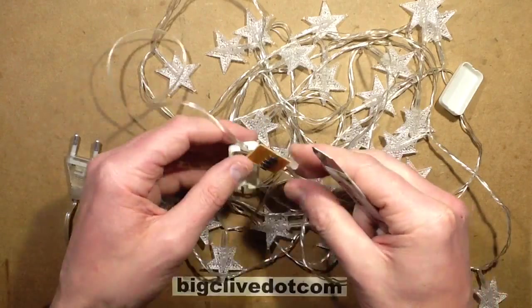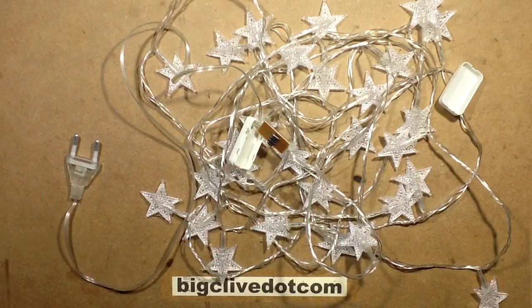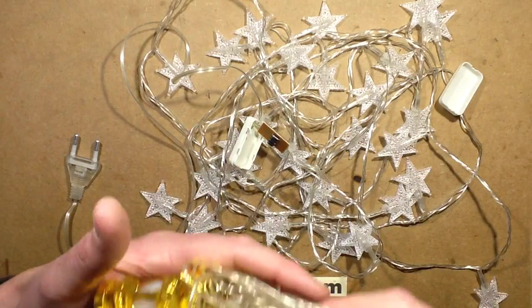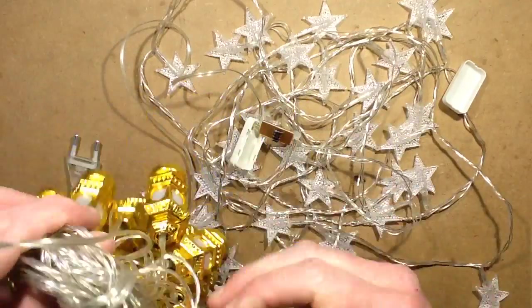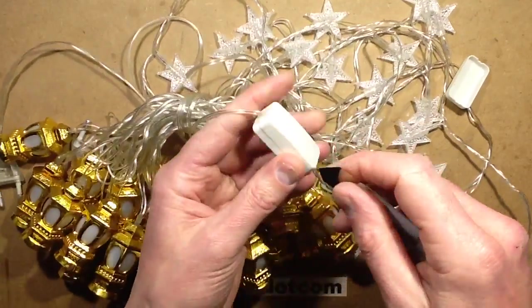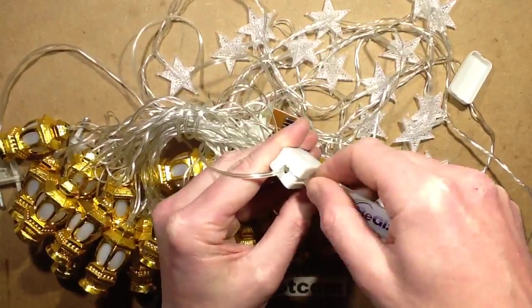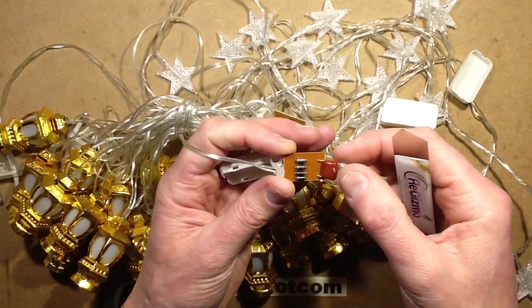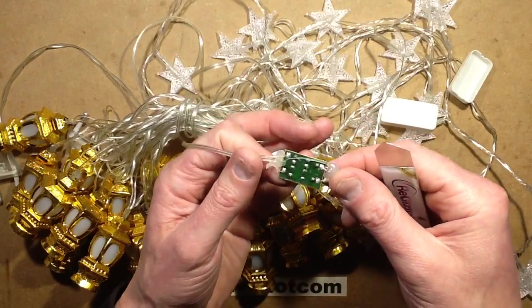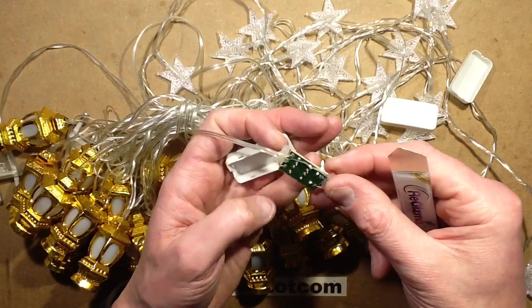Other versions of this—hold on, I'll just grab another version—for instance this one that runs at much higher current is a bit scary in that sense. It uses a similar power supply. But I noticed this one has a capacitor. Initially when I saw a capacitor, oh, a capacitive dropper. But it's not. The capacitor is just across the output.